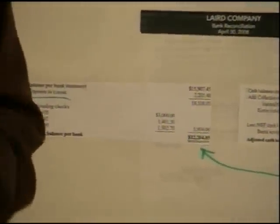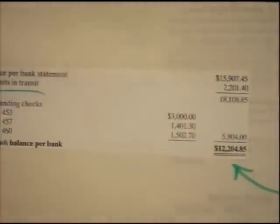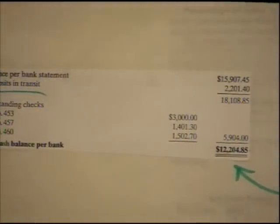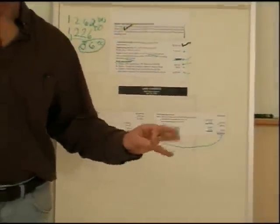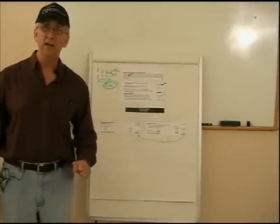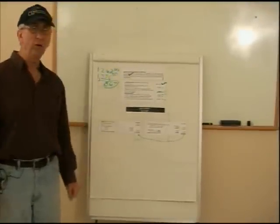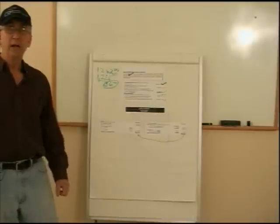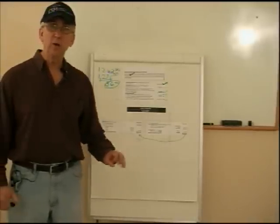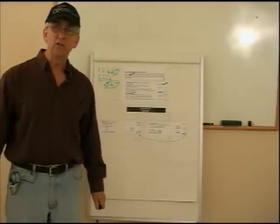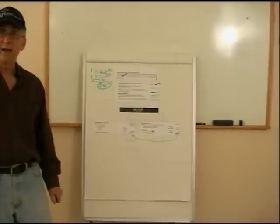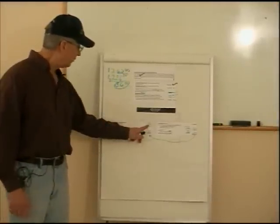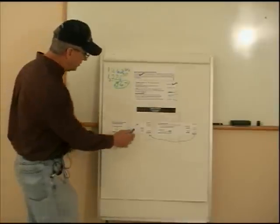A deposit in transit is a deposit that you have written in your checkbook but the bank is not showing it. Generally it occurs at the very last day of the month — you drive up to the bank and the window says all deposits made after 2 p.m. will be recorded the very next banking day. So if you roll in to the bank on April 30th after 2, you're going to make a deposit, you put that deposit in your checkbook, but when you get the bank statement it won't be on there because they're not going to record it until May 1st. So we have to add those deposits in transit, then we just come up with a subtotal.